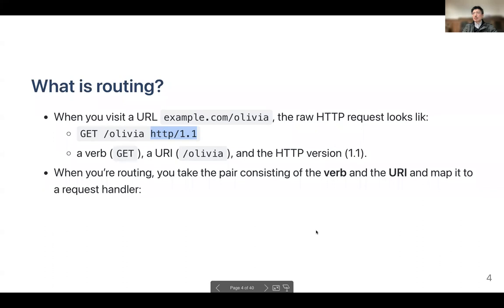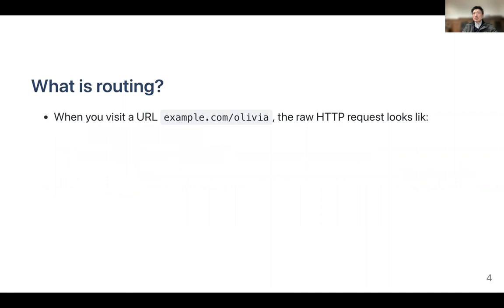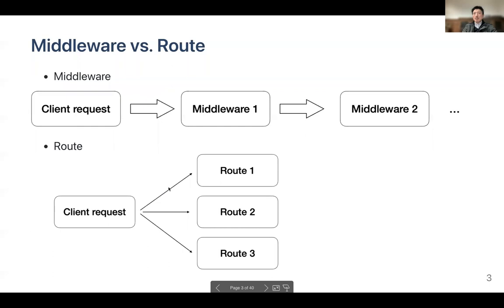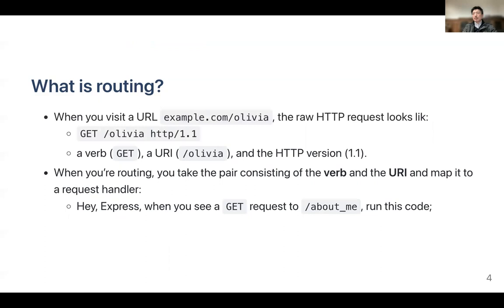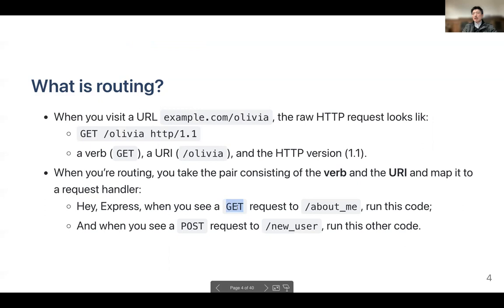When doing routing you consider both the type of the request and the path the user provides, then decide which response to give. Depending on the user request, you use the type of request and the URL path to decide whether it's route one, two, or three. For example, if it's a GET request with a certain path you run function one; a different type and path runs function two; and even the same path with a different request type runs function three.